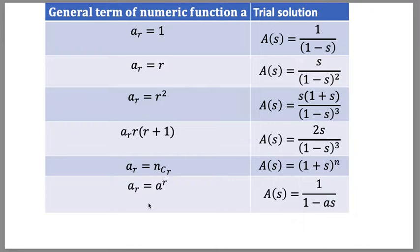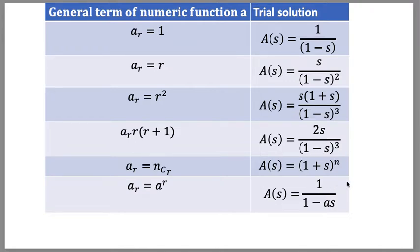Now we will learn how to find the trial solution if the general term is known. If ar = 1, then the generating function will be of the form 1/(1-s). If ar = r, then the generating function will be of the form s/(1-s)². If ar = r², then it is s·(1+s)/(1-s)³. If the general term is ar = r(r+1), then the generating function will be of the form 2s/(1-s)³. If the general term is nCr, then the trial solution will be of the form (1+s)^n. If the general term is a^r, then the trial solution will be of the form 1/(1-a·s).